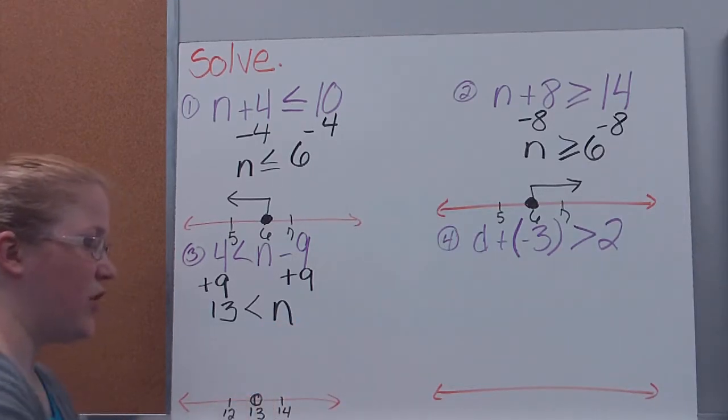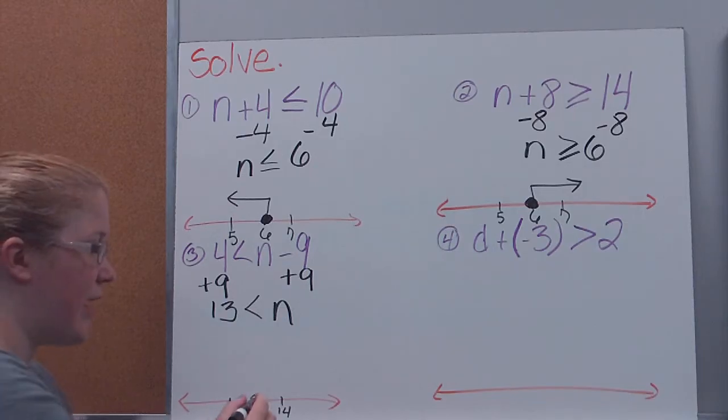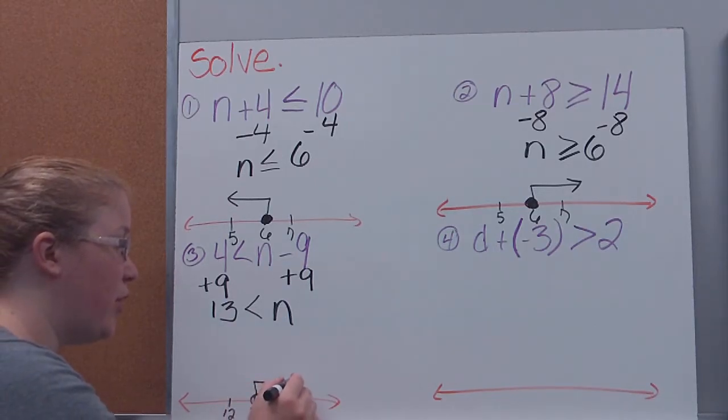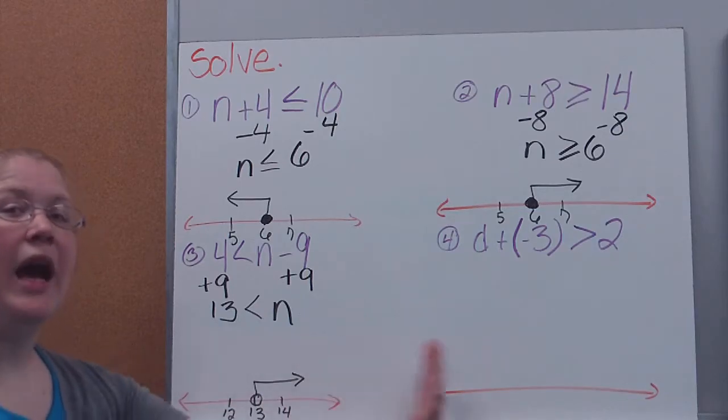Now remember, since it's not equal to, I need to use an open circle, because 13 is not greater than 13, so it's not included in here. Only the numbers that are beyond that are included in there.